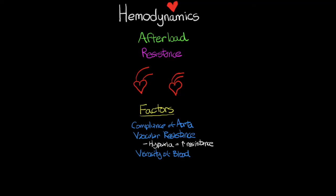At this point we've covered all the factors that determine cardiac output — heart rate and stroke volume — and broken stroke volume down into preload, contractility, and afterload. This concludes this lesson on hemodynamics and cardiac output. In the next lesson we'll talk about how we monitor hemodynamics.